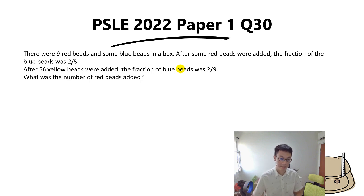This is called constant part. Write this down - constant part concept means one part remains constant while the other parts change. So this question is a constant part concept. Let's use ratio to solve this question. If we know that the fraction of the blue beads was 2 out of 5, the ratio for blue to red will be 2 is to 3, because 5 minus 2 gives us 3.